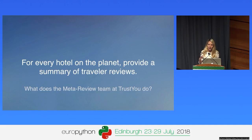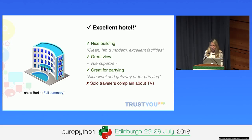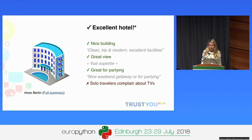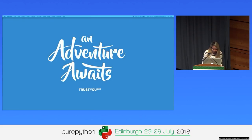So what we want to do is basically provide a summary containing all the relevant information from all the reviews we can find for each hotel — all the reviews we can find online — and make it a short summary so that people can read it and immediately get all the important information about the hotel. These are a few examples of information we can show: how the building of the hotel is, if it's modern, clean, the view, if it's good for partying. We can also show information such as 'solo travelers complain about TV.' I wanted to show how it looks from our website.